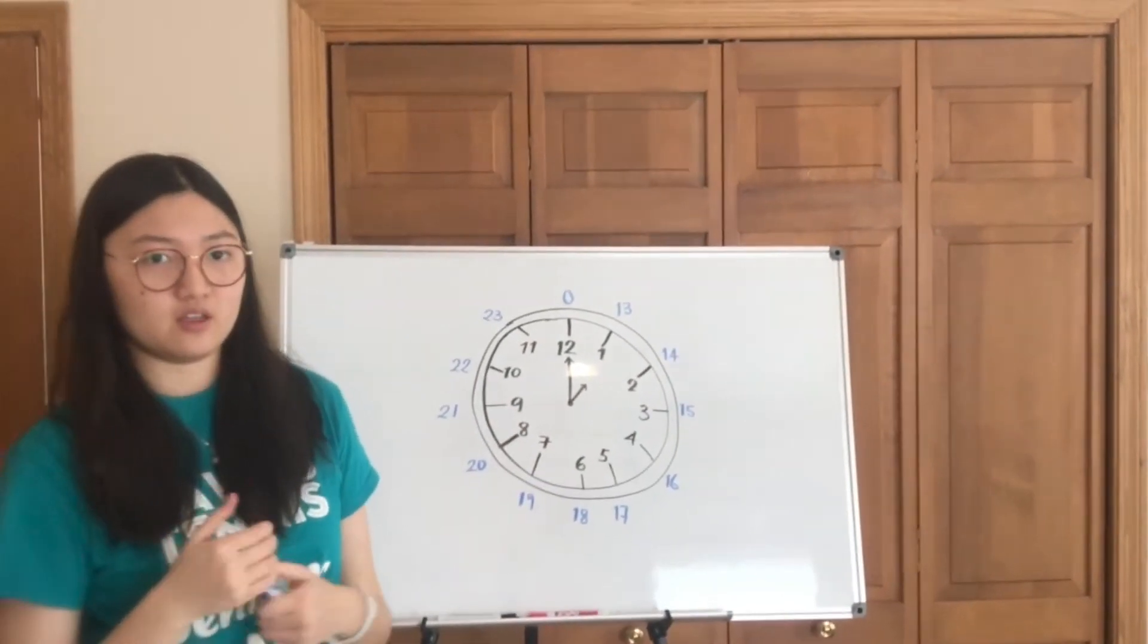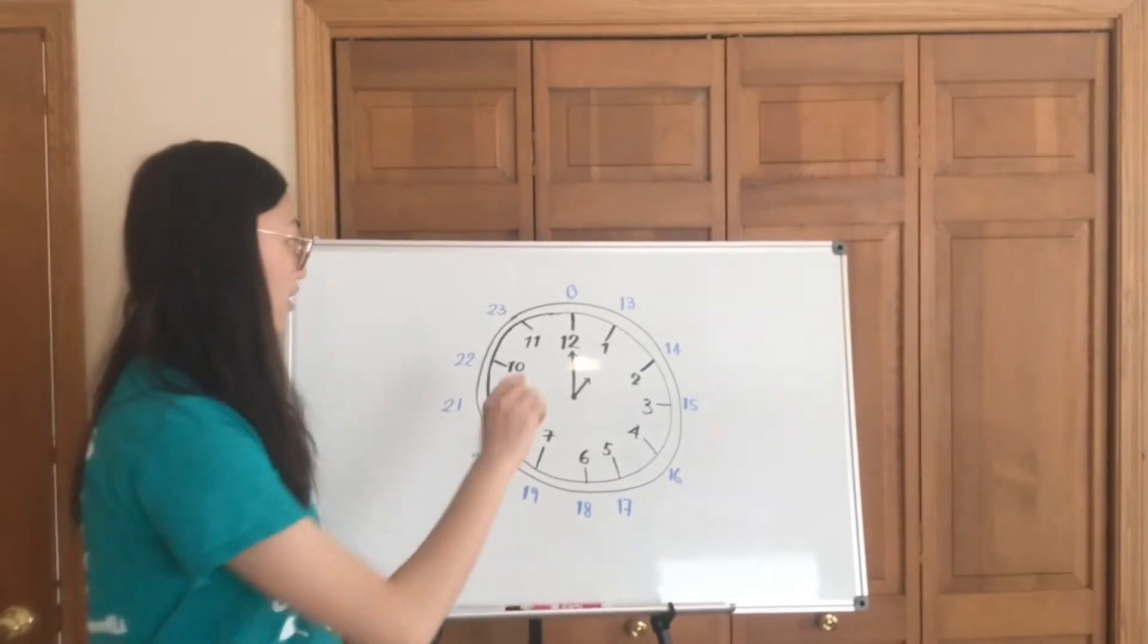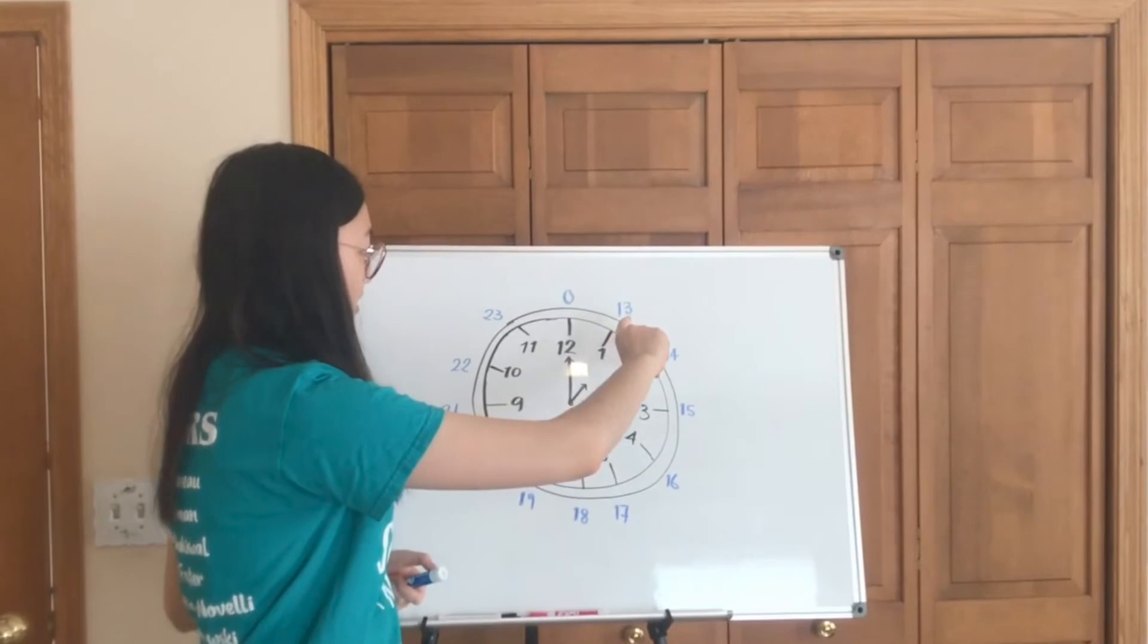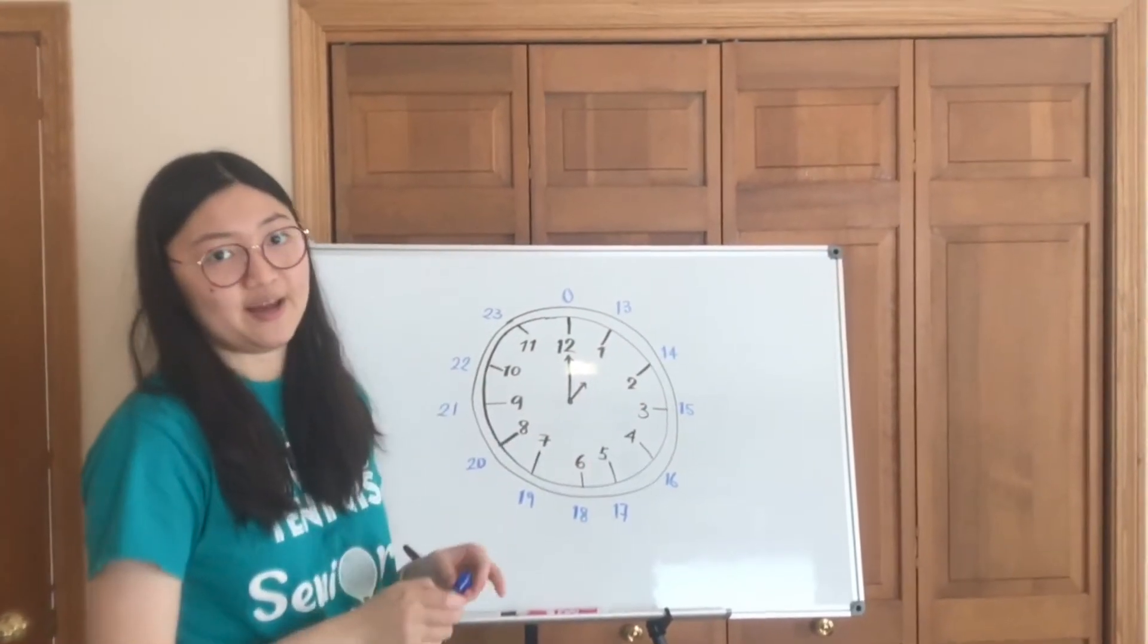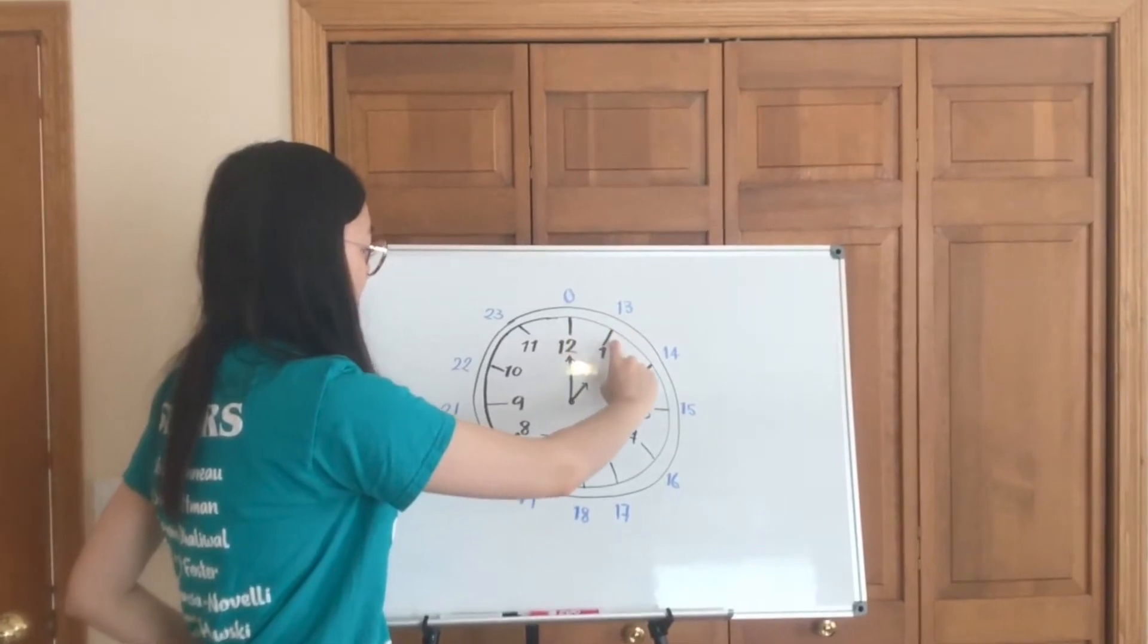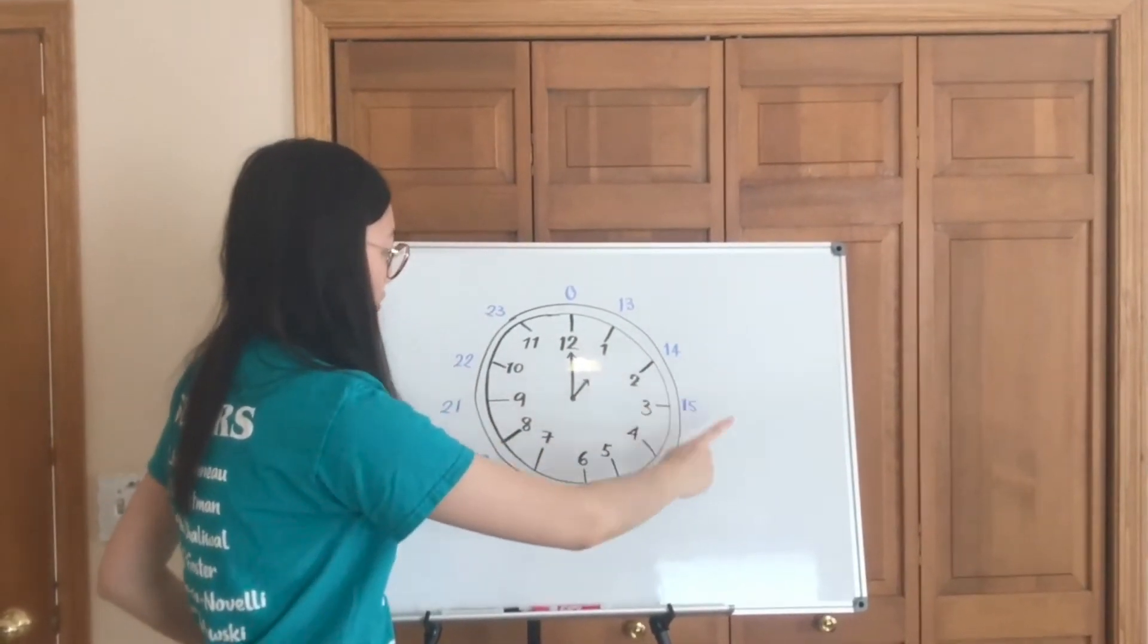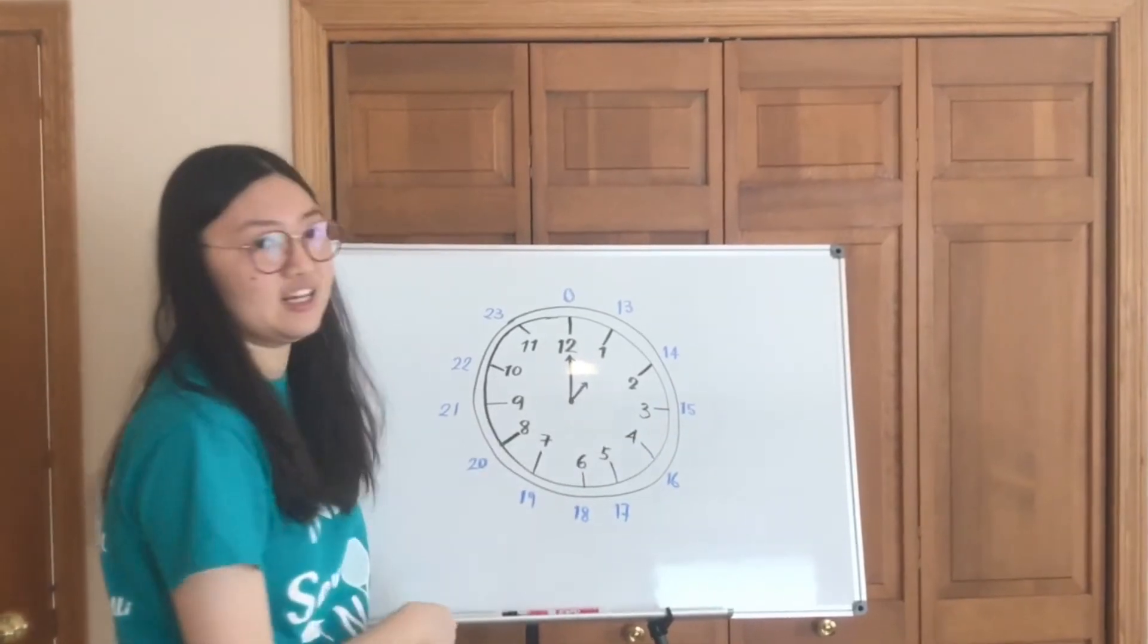But what happens when the 13th hour hits, say like in military time? Well, 13, we know from military time, is 1 o'clock. You basically count one more over 12 and then you start over again. And 14 maps onto 2, 15 maps onto 3 o'clock, etc.